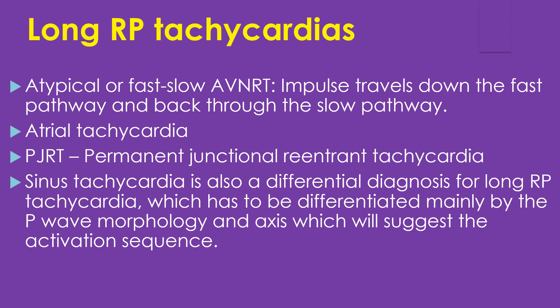Other forms of long RP tachycardia are atrial tachycardia and PJRT, or permanent junctional reentrant tachycardia. Sinus tachycardia is also a differential diagnosis for long RP tachycardia, which must be differentiated mainly by the P wave morphology and axis, which will suggest the activation sequence from the sinus node downwards into both atria.